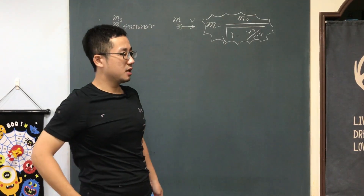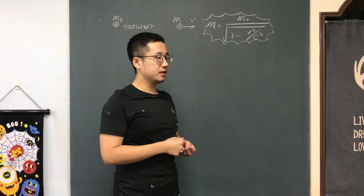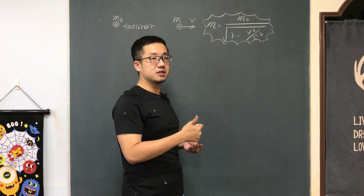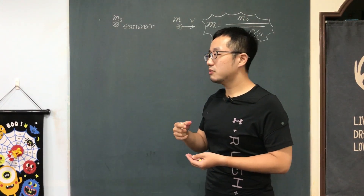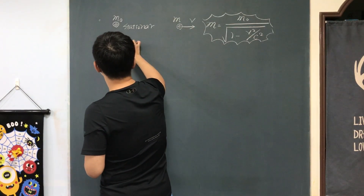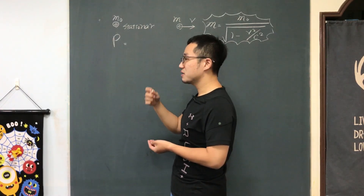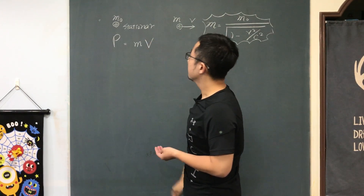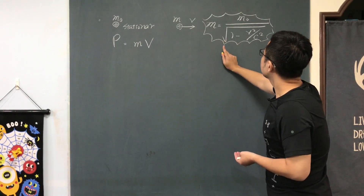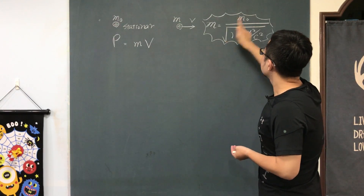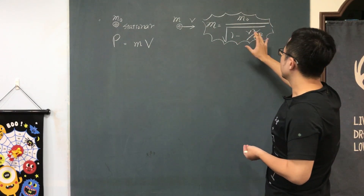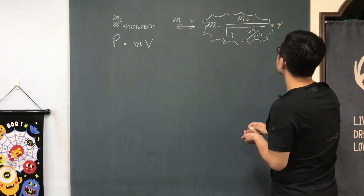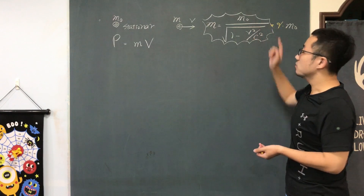When something is moving really fast, I should correct all the physics quantities that involve mass — things like momentum and kinetic energy. For momentum, it's really simple: I can just replace the rest mass with the expanded mass M. This mass is expressed by M₀ divided by the square root of 1 minus v² over c², which we can write more compactly as gamma times M₀, where gamma equals 1 over the square root of 1 minus v² over c².